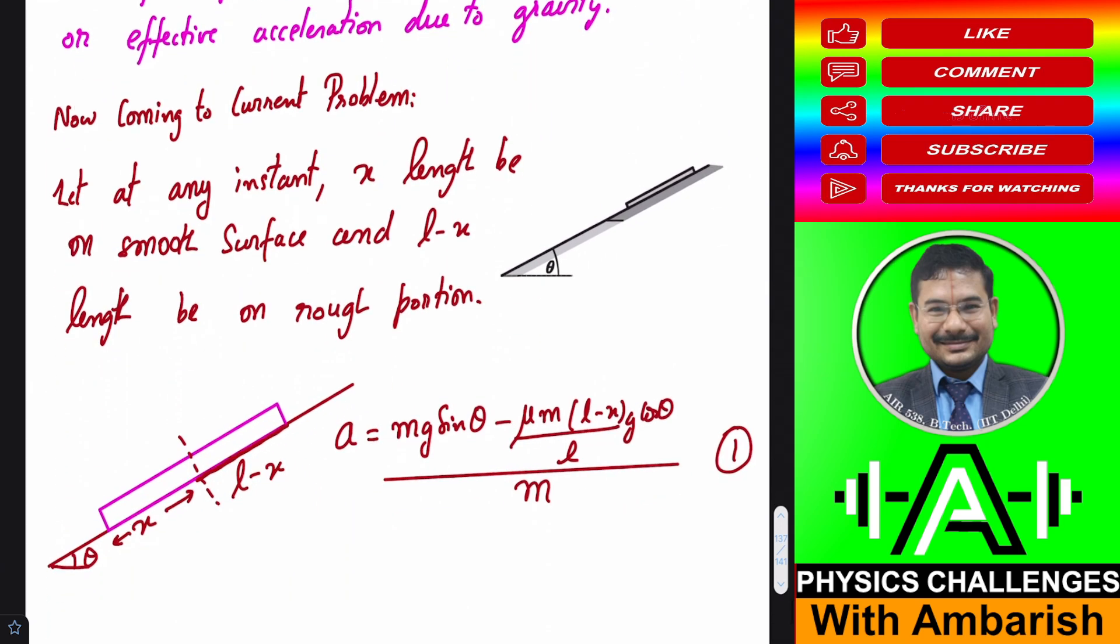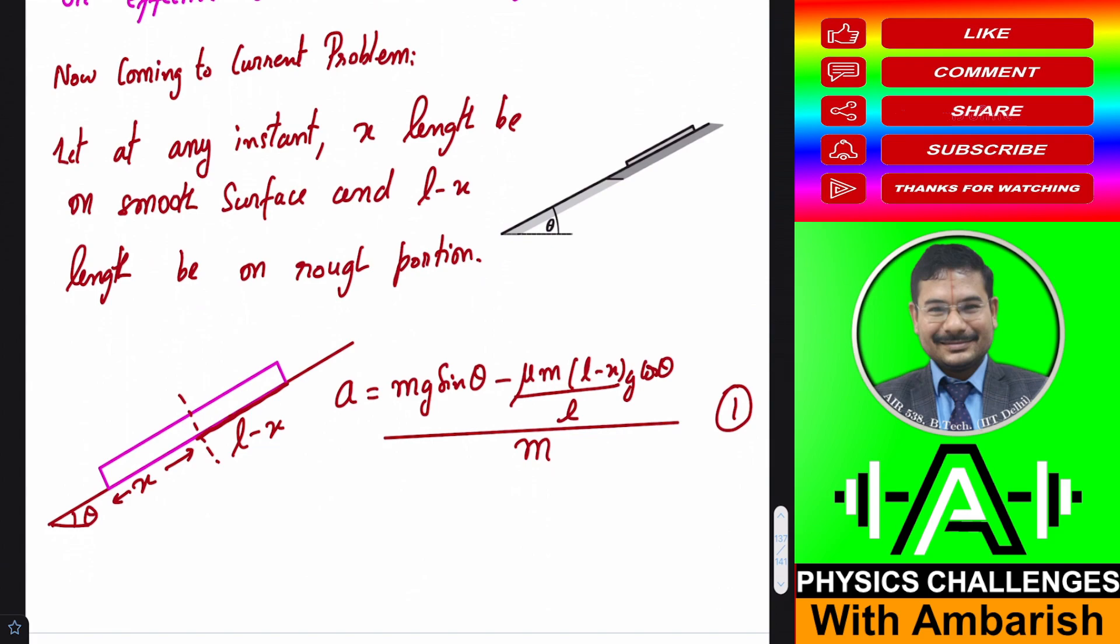Now coming to the current problem, suppose this has slid some distance. Let's say x distance is on the smooth portion and l minus x distance is on the rough portion. This will have some acceleration, so I can go into an accelerated frame a, having same velocity as this block. In such a frame, this will appear to be at rest but I will have to apply pseudo force. Pseudo force is proportional to the mass of any element, so everywhere the pseudo force will be proportional to the mass of every element. So pseudo force can be clubbed into effective gravity.